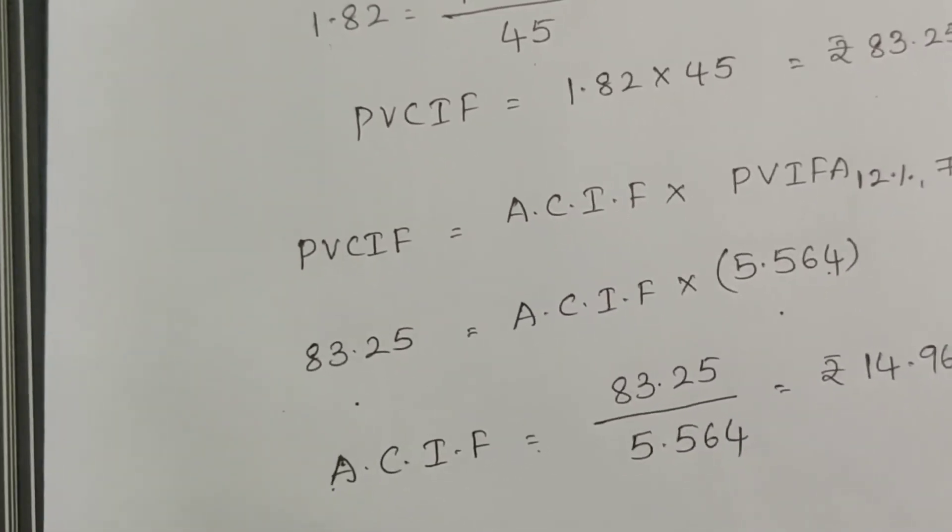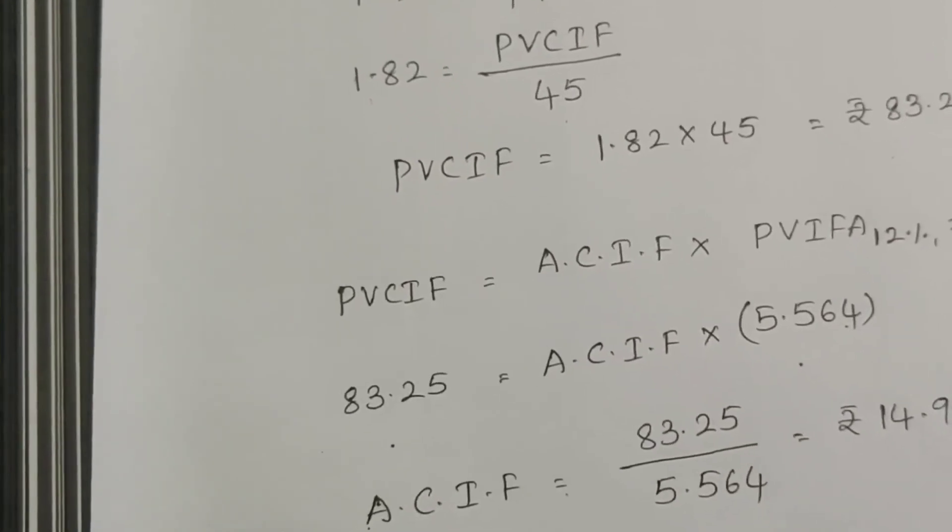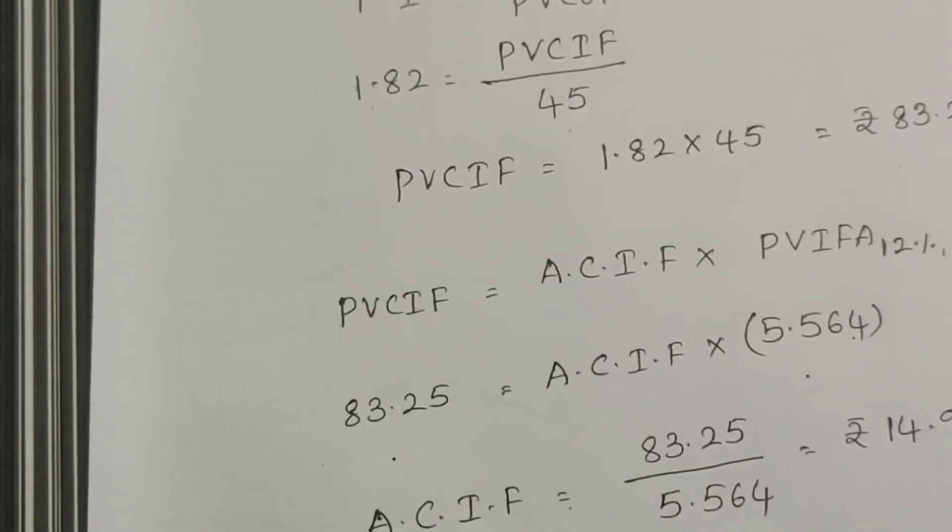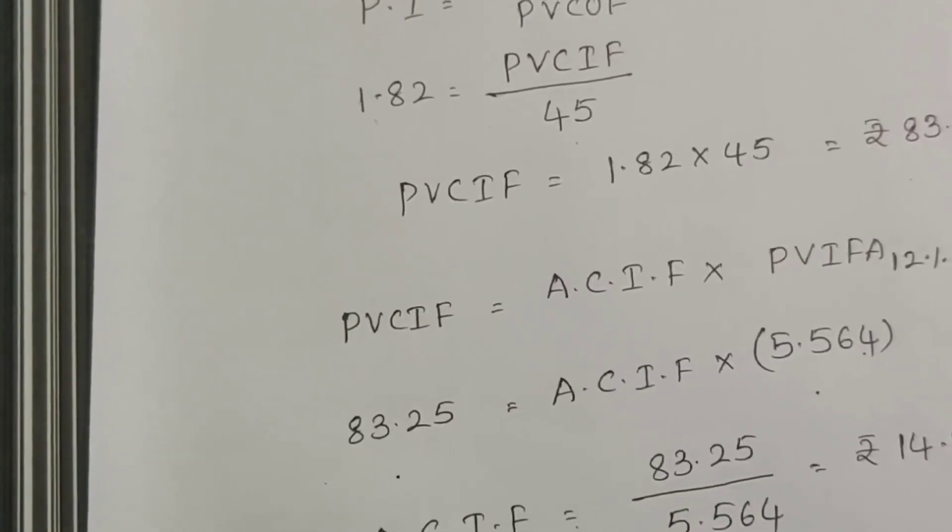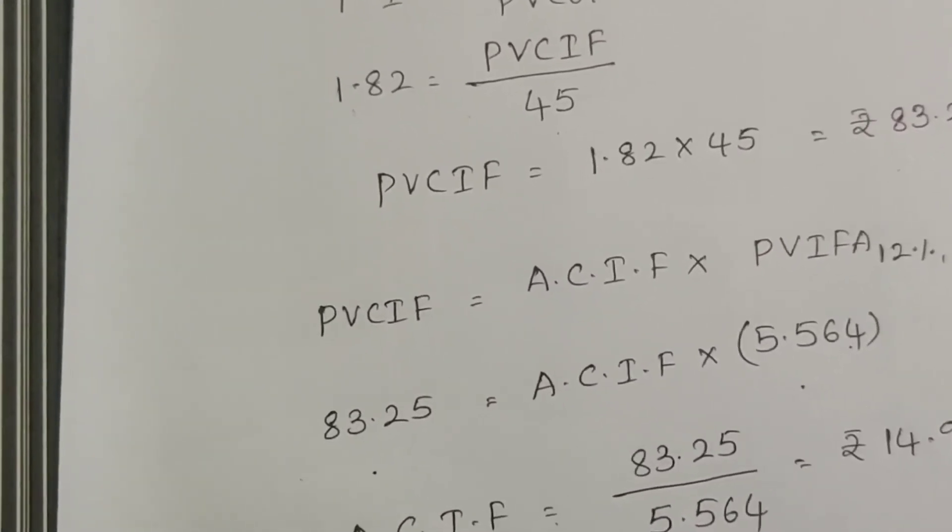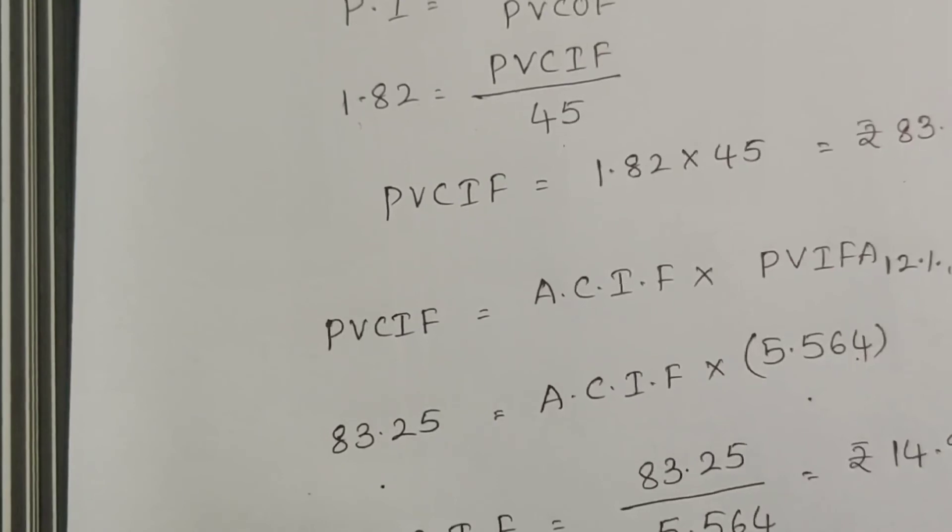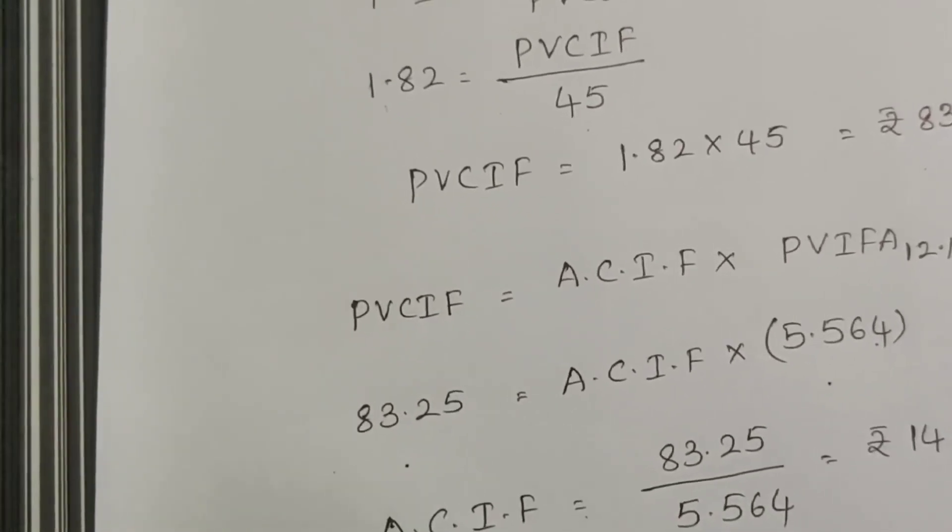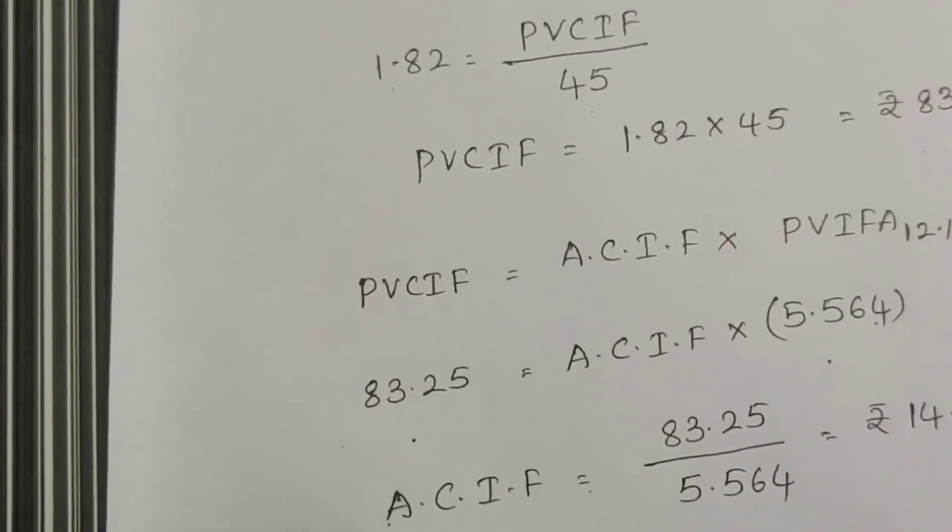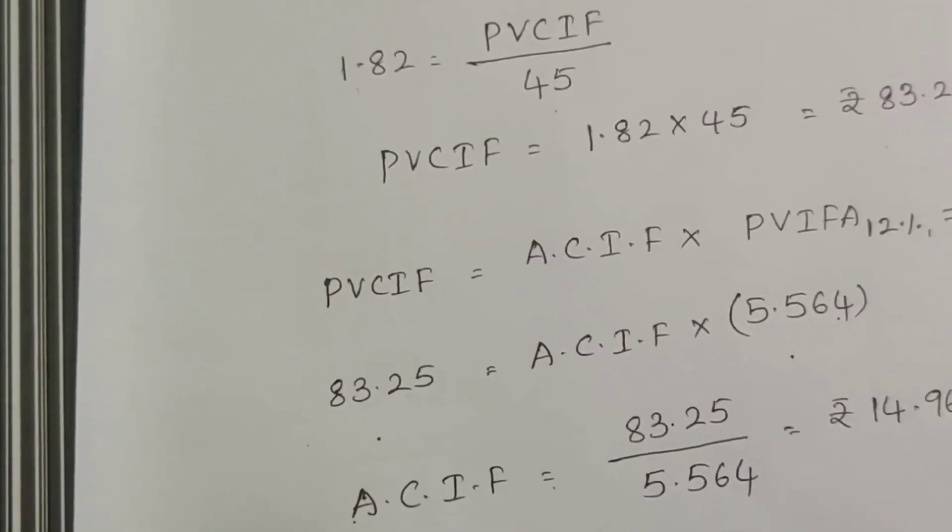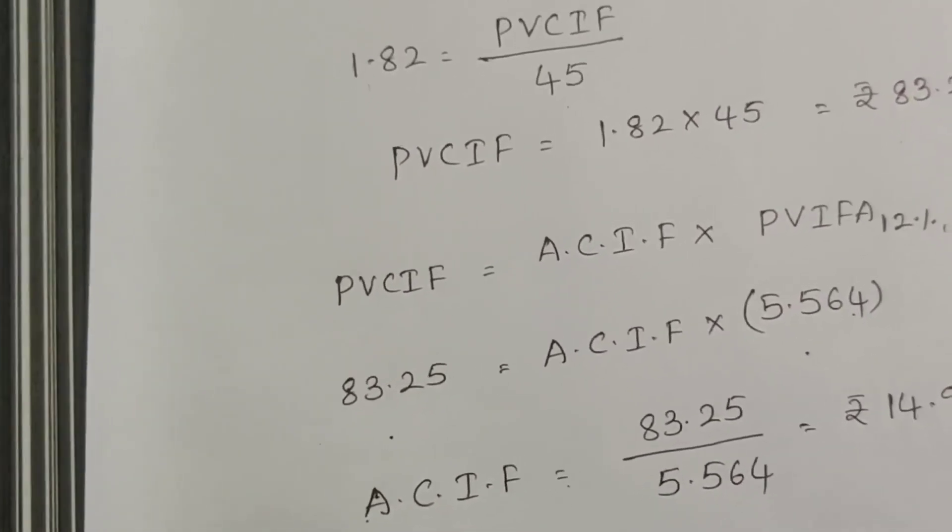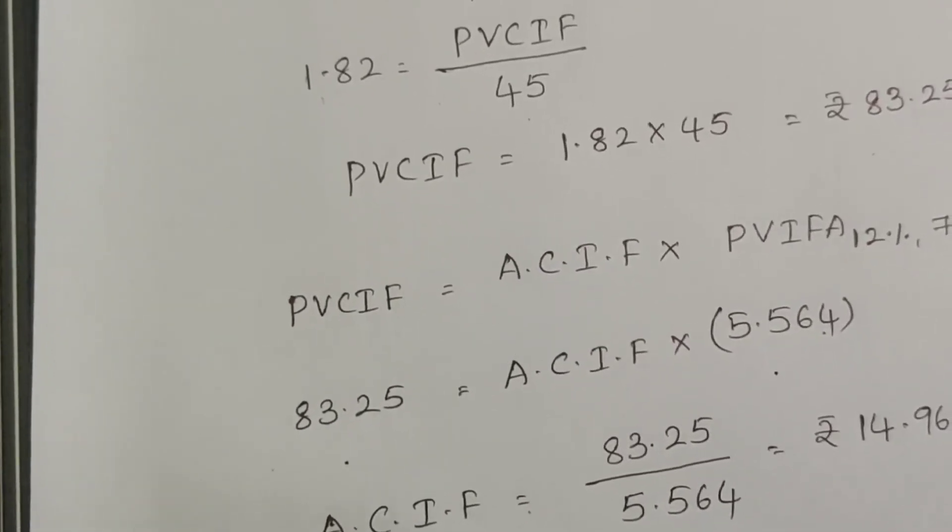So every year we will get 14.96 lakhs as the cash inflow upon the investment of 45 lakhs we made from this project. It is like a backward calculation. By using profitability index we have calculated the annual cash inflows. Very simple, easy to understand.